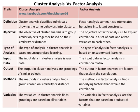The methods in cluster analysis find groups based on similarity or distance, whereas the methods in factor analysis find underlying factors that explain the correlation. The variables in cluster analysis groupings are based on all variables, whereas in factor analysis the factors are based on a subset of variables.